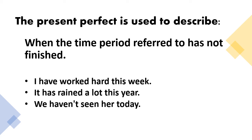Present perfect is also used when the time period referred to has not finished. For example, I have worked hard this week. So, she's been working hard this week. And another example, it has rained a lot this year. So, this year has been raining a lot. And the other example is, we haven't seen her today. So, today is not yet done and we haven't seen her.